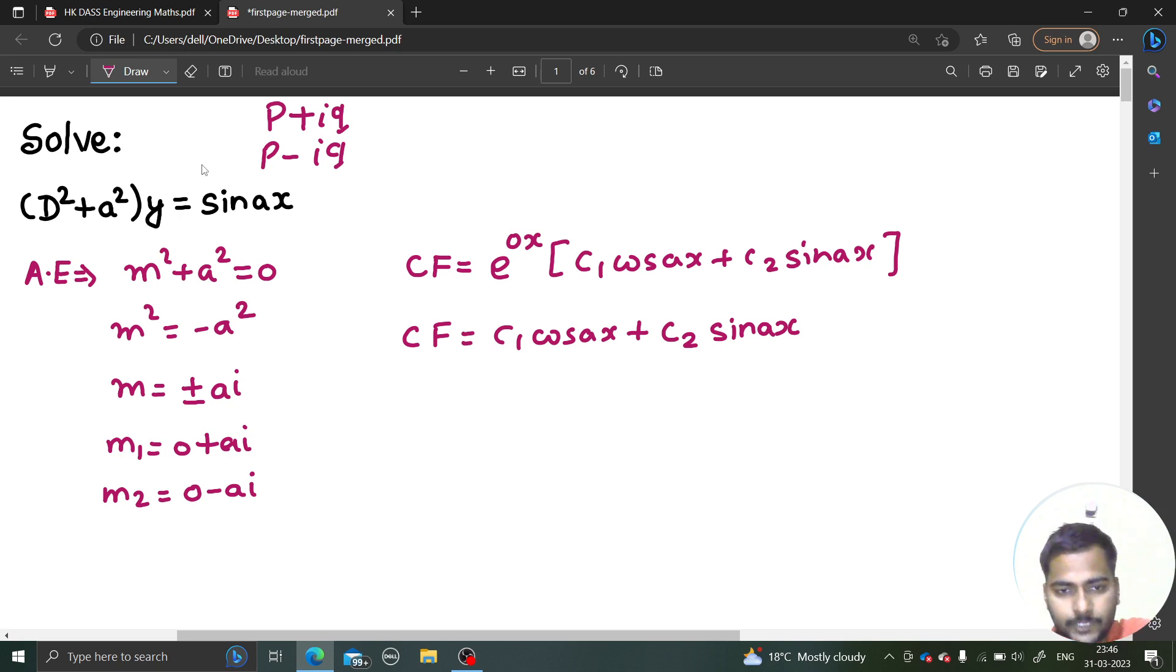Now, coming to the particular integral portion. That is nothing but 1 upon f of d operating on RHS which is in this case sin ax. So how to find the particular integral for sin ax? First of all, let me write function of d which is d square plus a square. This is operating on sin ax.